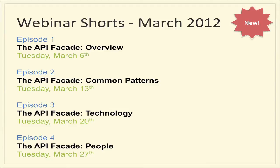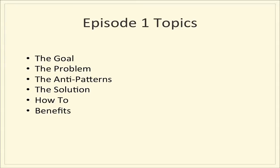Here's the arc of the series over the next four episodes. Today we'll cover the overview, next week we'll dig into common patterns around creating an API facade, episode three gets into the technology people use to accomplish an API facade, and finally we'll talk about the people and team needed to make it happen. For episode one, we'll bang through the agenda quickly — covering the goal, the problem that stops us from accomplishing it, some anti-patterns, and what I feel is one of the best solutions out there.